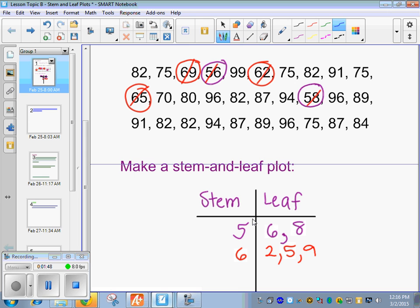And how about in the 70s, what do we have? 70, 75, 75, 75, 75, 75. So we put a 7, and what do I put over here? 0, 5, 5, 5, 5, 5. There are 4 of those, right? 1, 2, 3, 4. Yep.